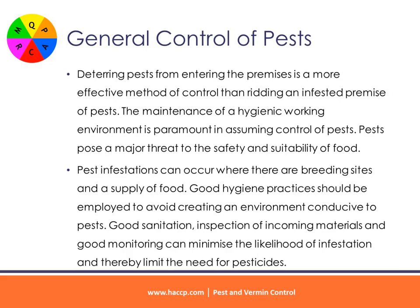General Control of Pests. Deterring pests from entering the premises is a more effective method of control than ridding an infested premise of pests. The maintenance of a hygienic working environment is paramount in assuming control of pests. Pests pose a major threat to the safety and suitability of food. Pest infestations can occur where there are breeding sites and a supply of food. Good hygiene practices should be employed to avoid creating an environment conducive to pests. Good sanitation, inspection of incoming materials and good monitoring can minimize the likelihood of infestation and thereby limit the need for pesticides.